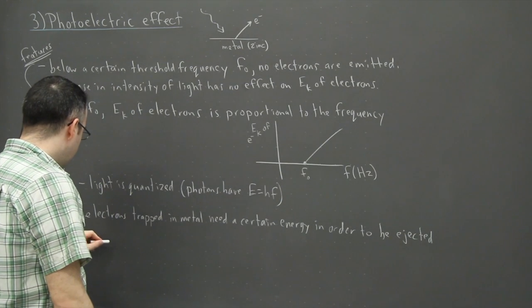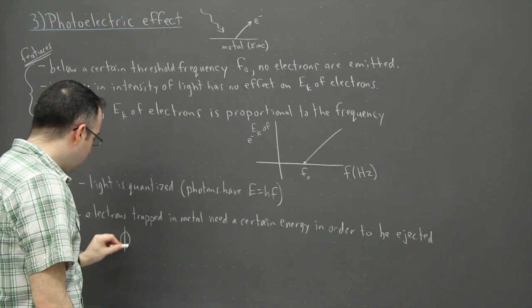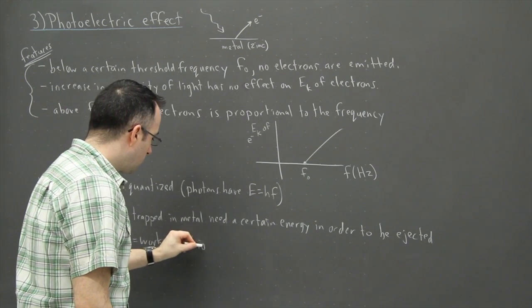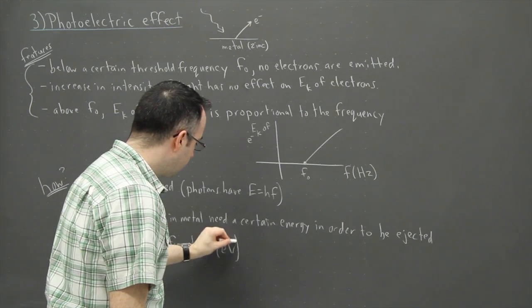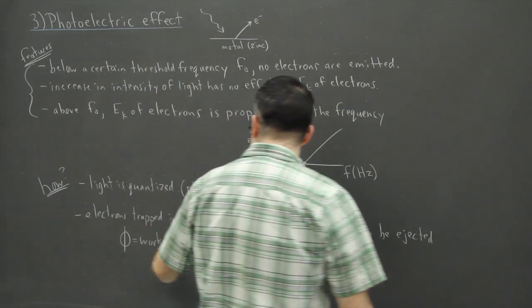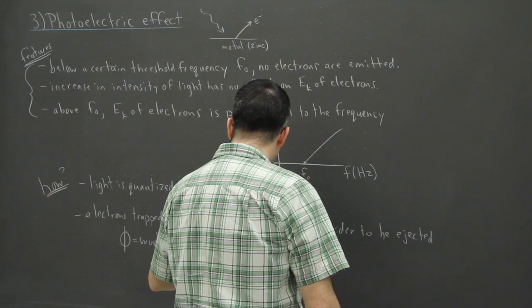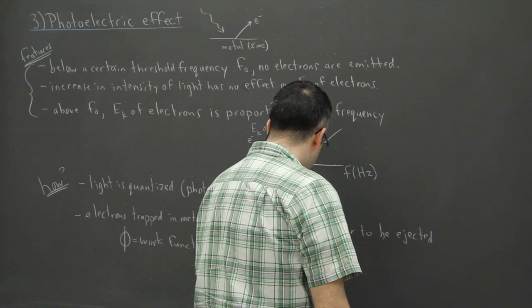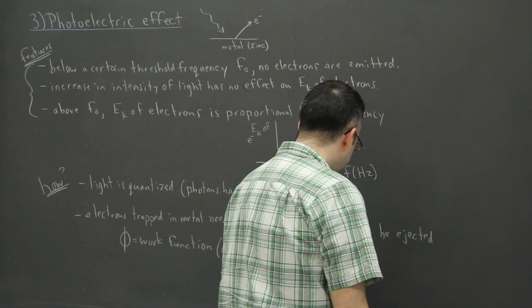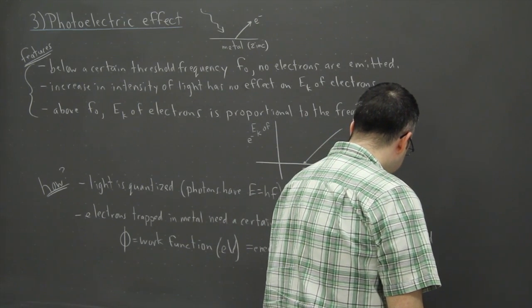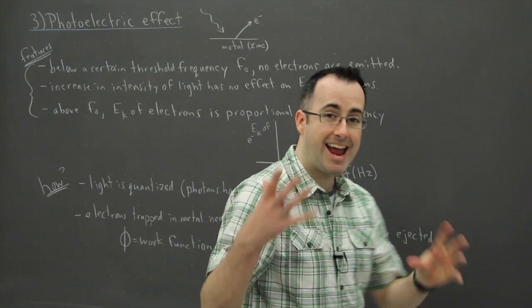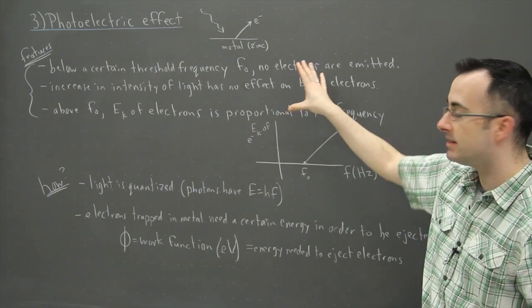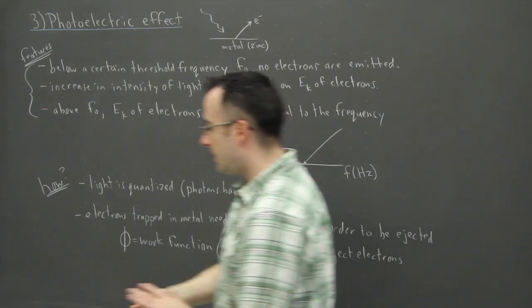So the main thing is this then. We have this thing that's defined called the work function. It's measured in electron volts. Okay, this is the key thing here. The work function, and that's the energy needed to eject electrons. Or you could say it's the energy that the metal is using to sort of hang on to these electrons. So this is basically what Einstein did. He explained this stuff really well, it turns out, quite elegantly.